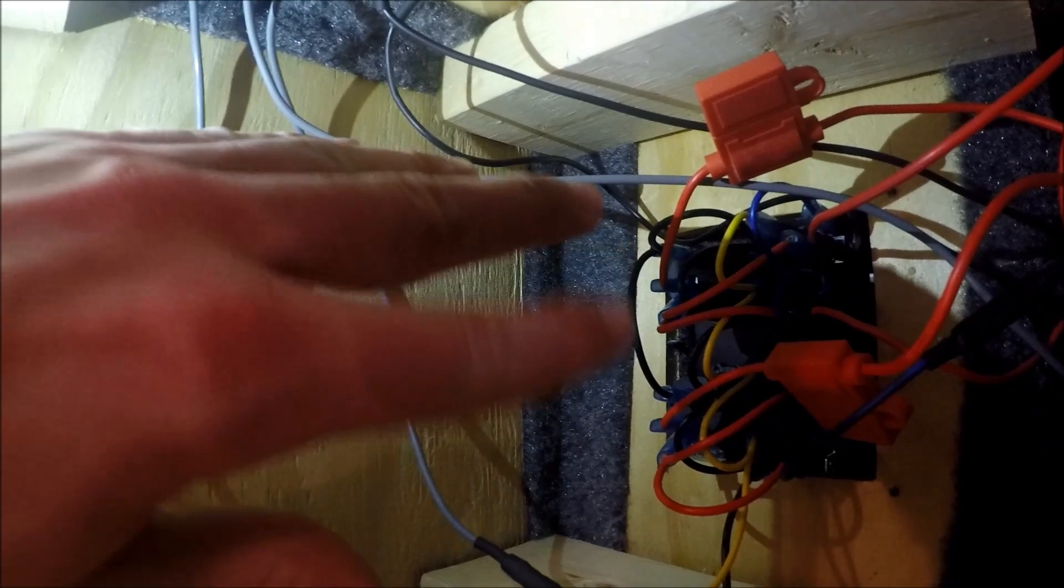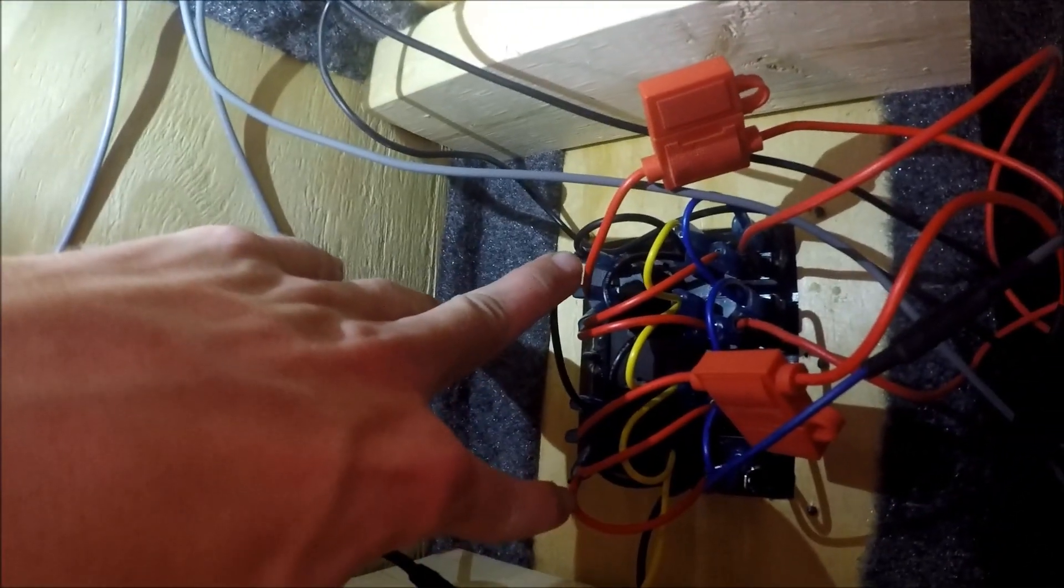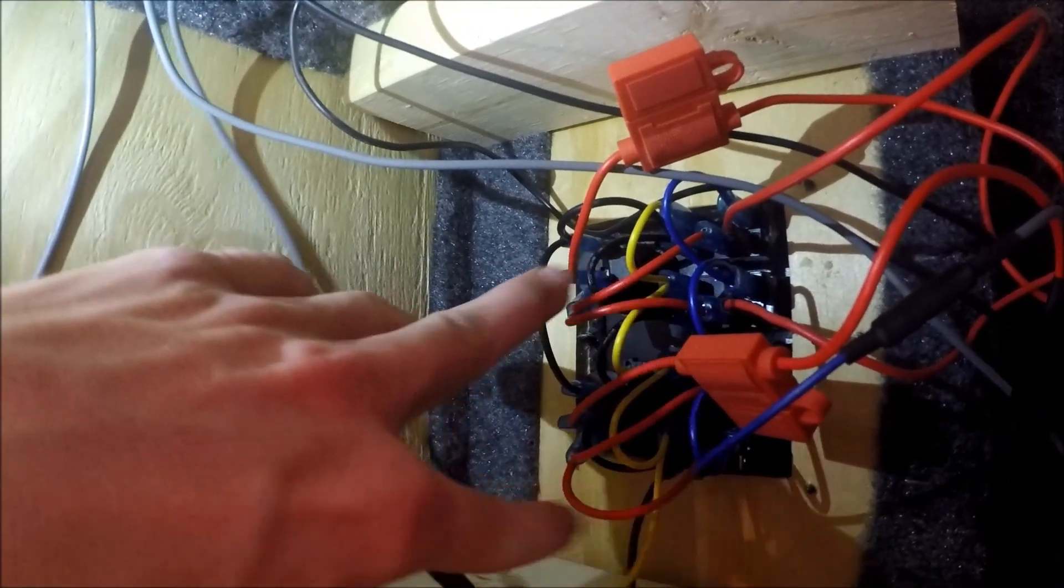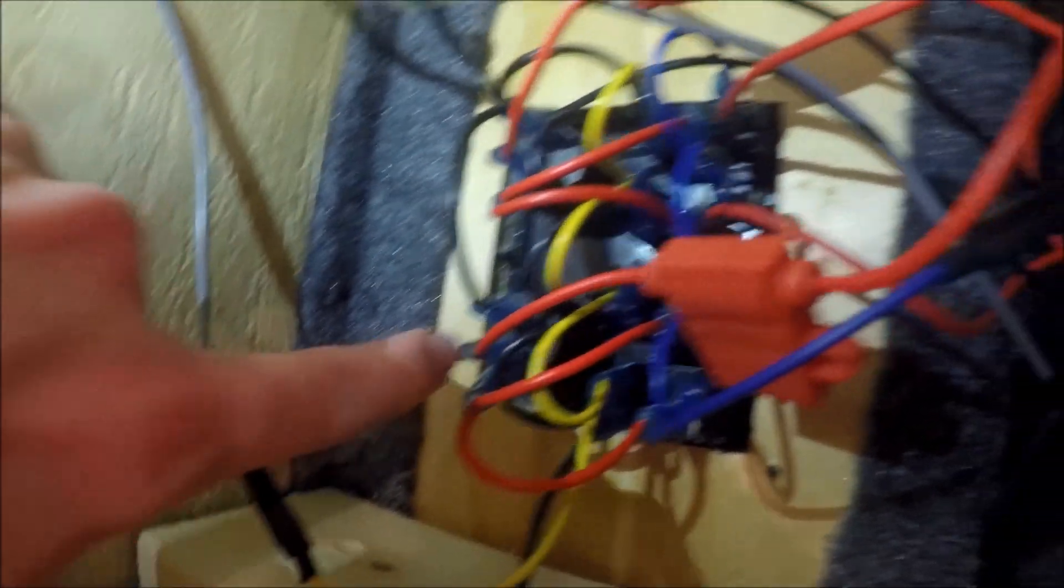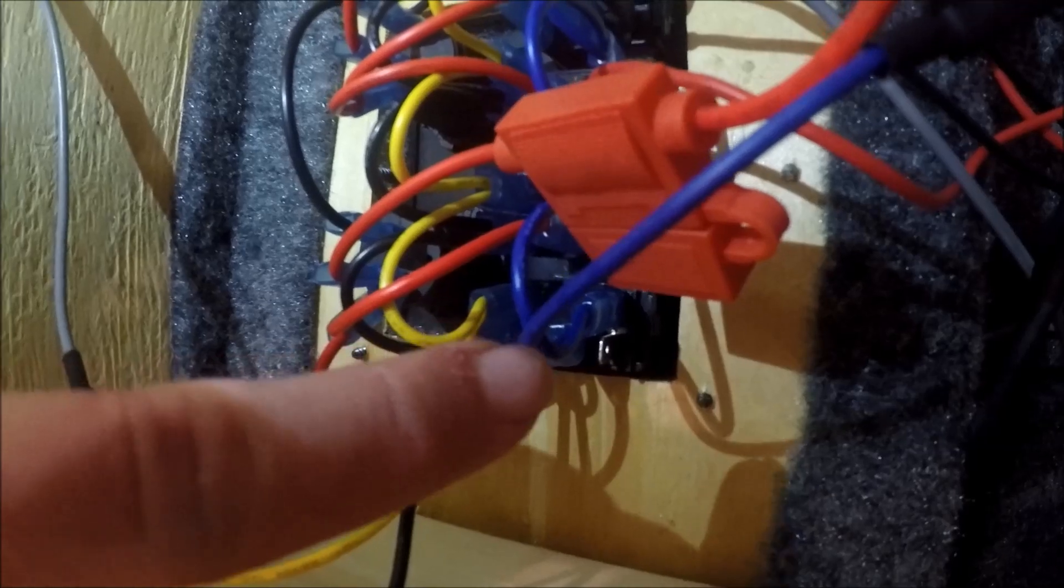And then the positive wires, you are going to condense down. So you're going to take the one from your cigarette lighter and the one from your USB as well as the blue wire. They are all positives.